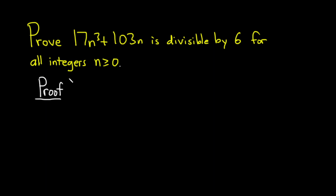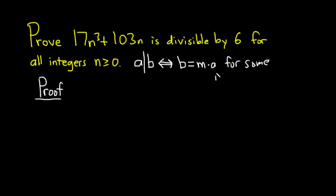Before we start the proof, let me briefly refresh your memory on what divisibility means. We say that a divides b, written like this, or b is divisible by a. This is the same thing as saying that b is a multiple of a — so b is equal to some integer m times a, for some integer m. That's how we're going to think about it in this problem.